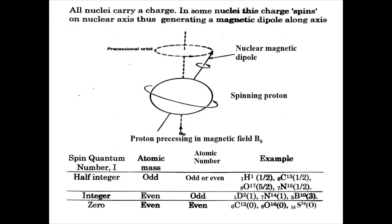All nuclei carry a charge, and in some nuclei this charge spins on the nuclear axis, generating a magnetic dipole along that axis. The molecule is spinning in two ways — on its own axis and also moving around the main axis.